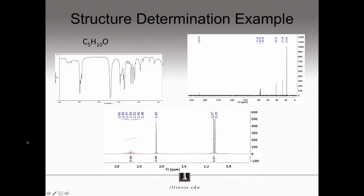In a typical spectroscopy problem, you will be provided the molecular formula for the unknown molecule — in this case C5H10O — and a series of spectra. In this case, I have an IR spectrum in the upper left, a carbon-13 NMR spectrum in the upper right, and a proton NMR spectrum at the bottom. This particular problem does not include a mass spectrum, but you can imagine also being given mass spectra to interpret as well. This one slide contains a huge amount of information, so how do you begin trying to interpret these spectra and come up with an unknown structure? Well, you don't look at all of it all at once. To start with, let's look at the molecular formula and the infrared spectrum.